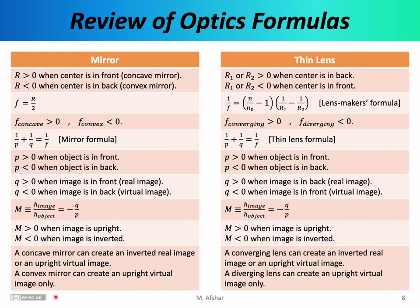In our study of optical systems, we've encountered a large number of equations. Let me summarize some of those equations and put them side by side so you can compare mirrors and thin lenses. In this class, we've discussed only spherical mirrors and spherical thin lenses. Since we're talking about spherical surfaces, the first thing we want to know is the radius of the surface. A mirror has one surface — the reflecting surface — so there is only one radius. A thin lens has two surfaces, front and back, so you need to specify two radii. These numbers can be positive or negative, and the rules for mirrors are opposite to the rules for thin lenses.